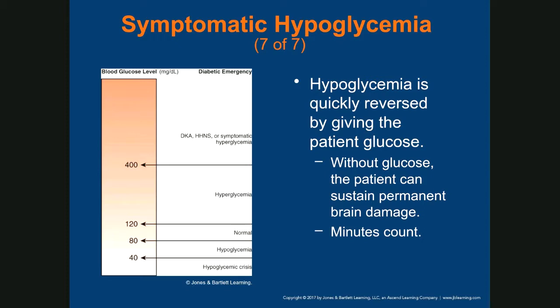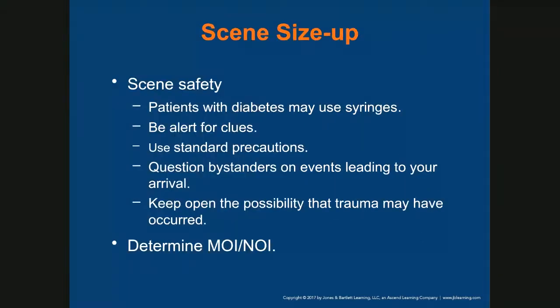Hypoglycemia is quickly reversed by giving the patient glucose. Without glucose, the patient can sustain permanent brain damage, so time is critical. In the scene size-up for diabetic patients, ensure scene safety — patients with diabetes may use syringes. Use standard precautions, question bystanders on events leading up to arrival, and keep open the possibility that trauma may have occurred, considering both MOI and NOI.